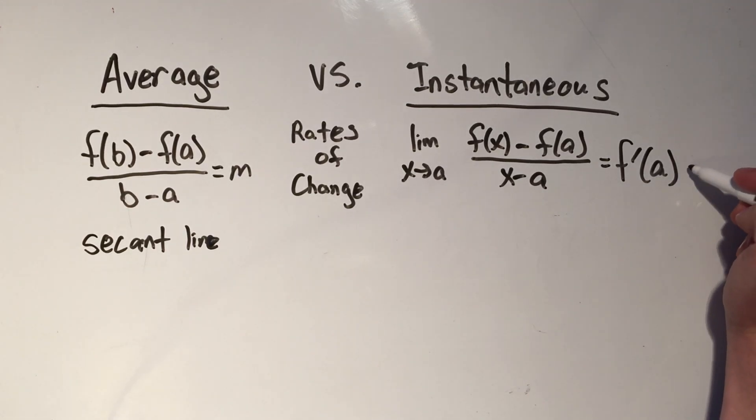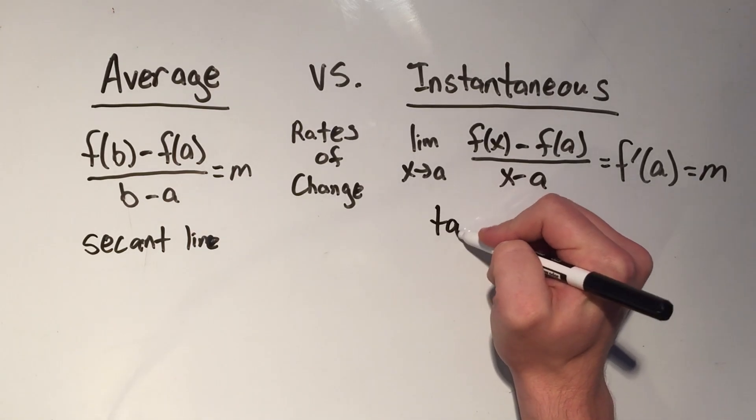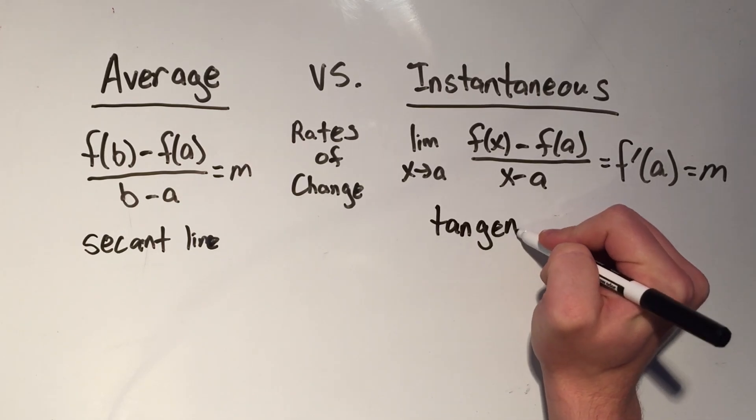And the slope, so these are both slopes. It's just the average rate of change is the slope between two points, and the instantaneous rate of change is the slope at one point, at a single point. And that's the slope of the tangent line.